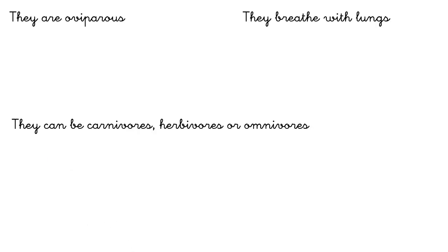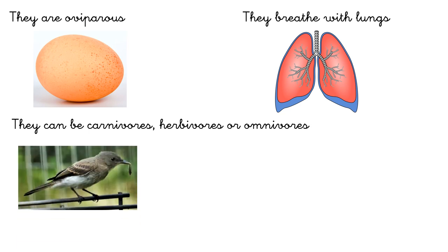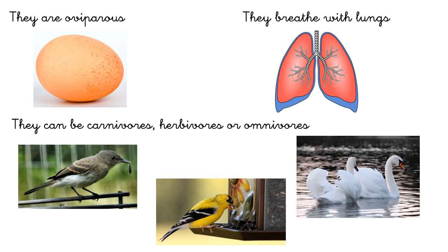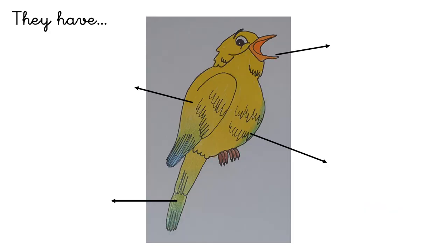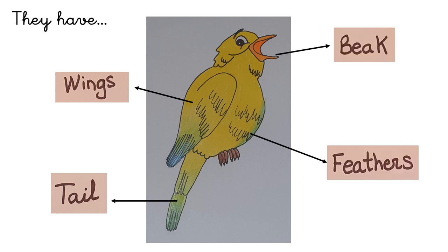Birds. Birds are oviparous, it means that they are born from an egg. They breathe with lungs, and they can be carnivores if they eat animals, herbivores if they eat plants, and omnivores if they eat animals and plants. They have wings to fly, they have a tail, a beak, and feathers.